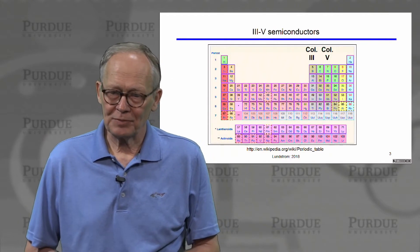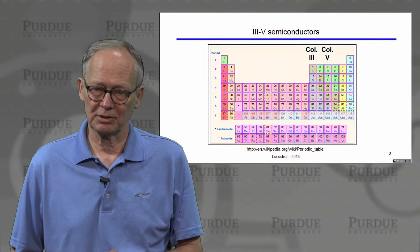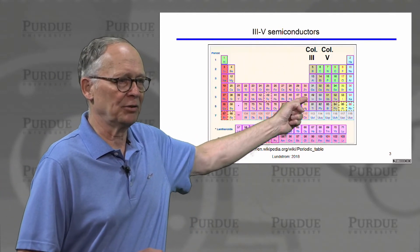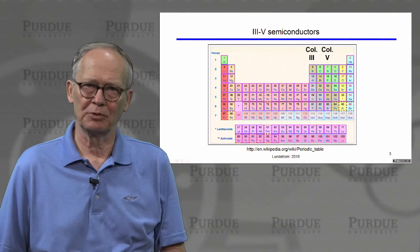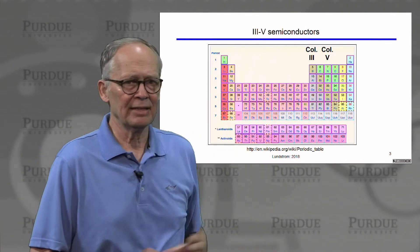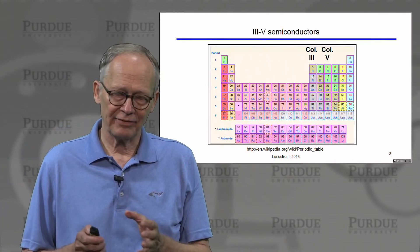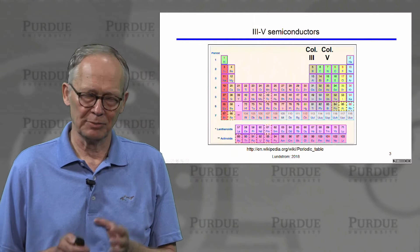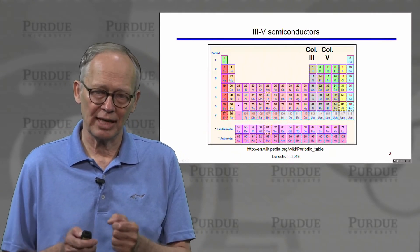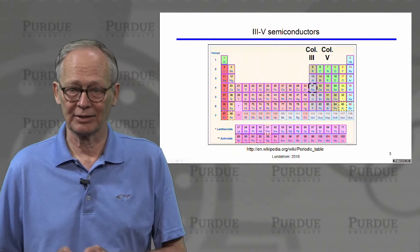Now, there are other semiconductors that are made from other columns, some common ones. For example, if I look at column three, the elements in column three have three valence electrons. If I look in column five, the elements in column five have five valence electrons. If I make compounds of materials between column three and column five, on average, they will have four valence electrons per atom. And they'll behave as semiconductors.